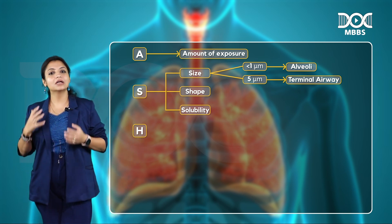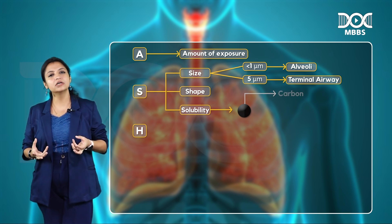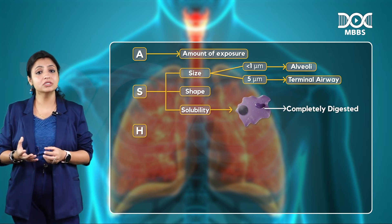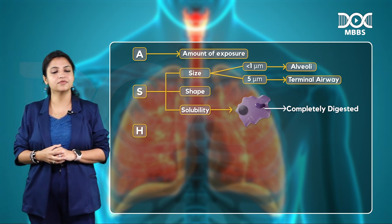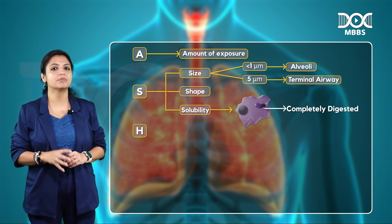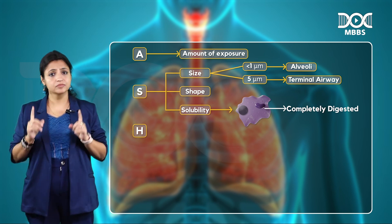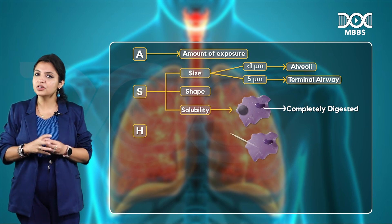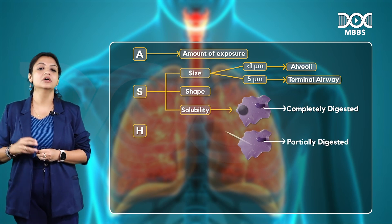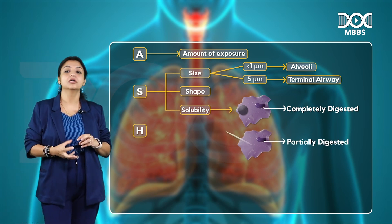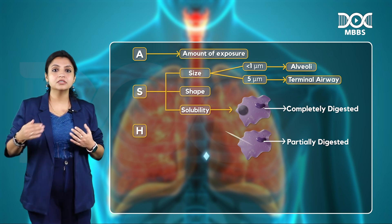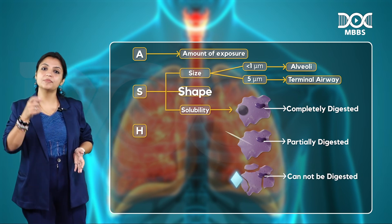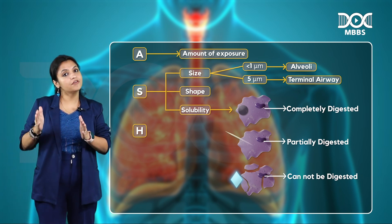For example, carbon is a particle that your macrophages can completely eat up and digest. However, being a pigment, it stays in the macrophages forever and eventually shows some cytopathic effect. Asbestos dust, on the other hand, is only partially digested by macrophages, so its effects will be different. Silica is yet another example — very different again. So size, shape, and solubility define what effect a particle has on you.